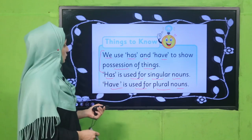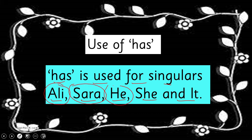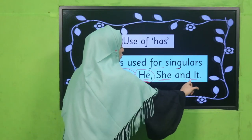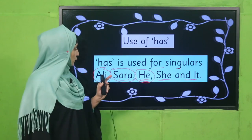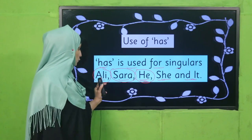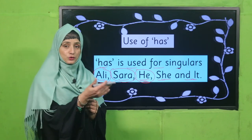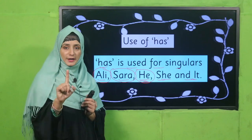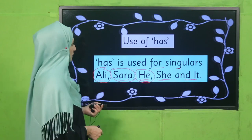Let's look at the use of 'has.' 'Has' is used for singular naming words like Ali, Sarah — these are particular names. And 'he,' 'she,' 'it' are singular substitution words. So we use 'has' with singular naming words or singular substitution words. Always remember: we use 'has' when we are talking about one person or one thing.